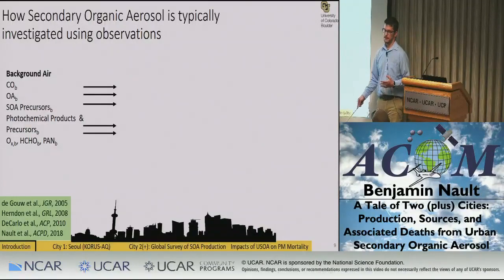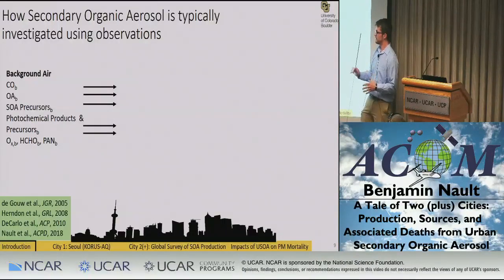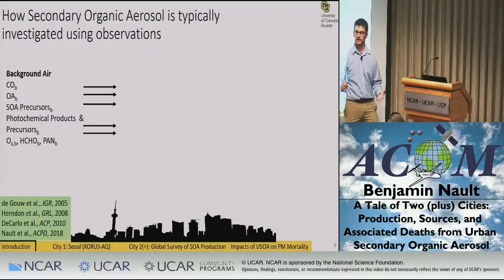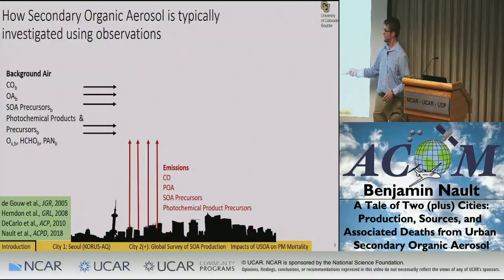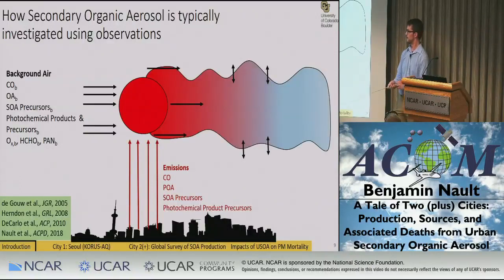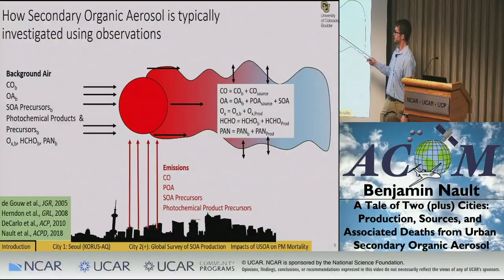Since models can give very contrasting ideas, I've been using a conceptual model with observations to understand SOA production in urban areas. As Yost Tigal and Pete DiCarlo described, you have background air flowing over a city — with background carbon monoxide, organic aerosol, SOA precursors, and photochemical products including ozone, formaldehyde, and PAN — while at the same time the city adds primary emissions of CO, primary organic aerosol, SOA precursors, and photochemical precursors. As this air mixes and moves downwind, the concentration at any point is the combination of its background, its source, and its production.